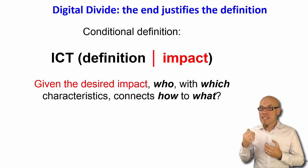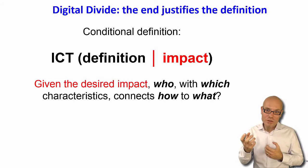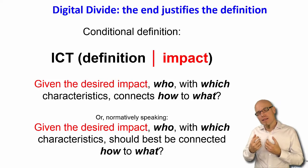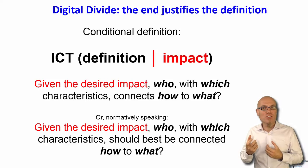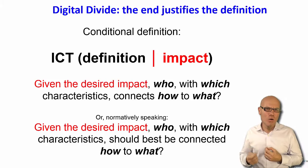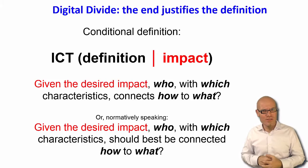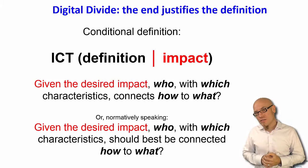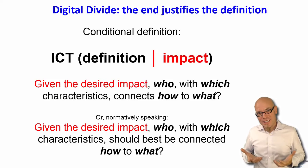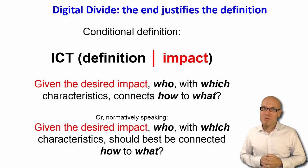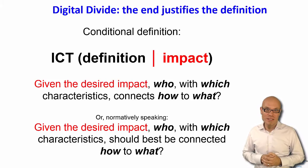You have to start with a certain impact in mind. Say for example: I aim at using ICT to fight gender discrimination. From that follows a specific definition of the digital divide — what's useful and what's not useful for you. Given your goal, the question becomes: who with which characteristics connects how to what? Or normatively: who with which characteristics should best be connected how to what? Then you have your personalized definition of the digital divide or digital development. As there is a myriad of different impact areas for ICT, there naturally should also be a plurality of definitions of digital development.